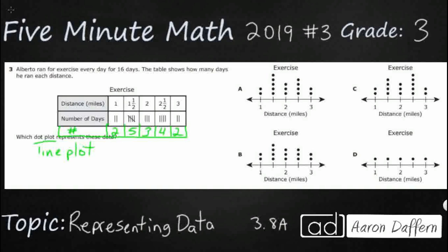And then if you put all of those days together, that's where you get the 16, the two plus five plus three plus four plus two, which is not really needed information. We don't really need to know how many days. We just need to match this information to the dot plot.